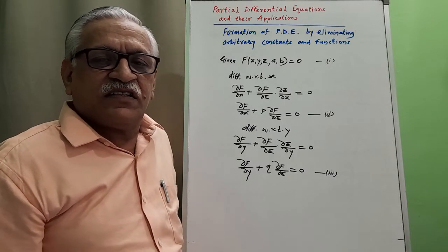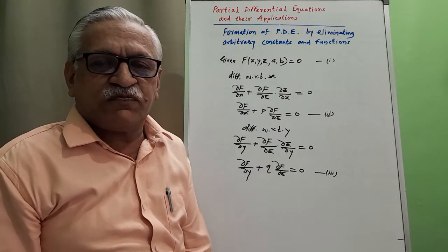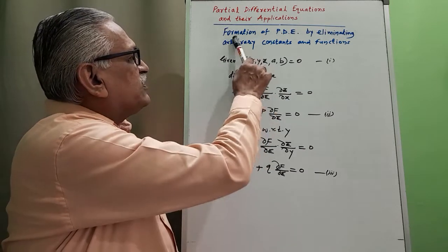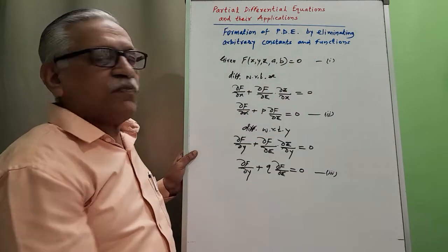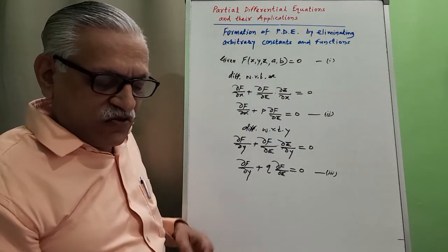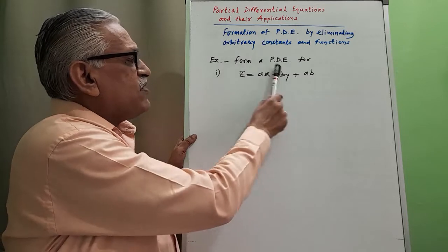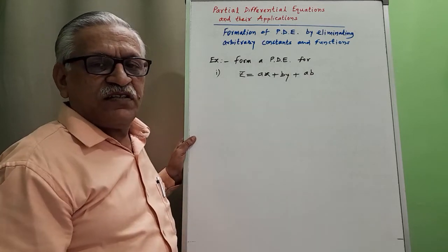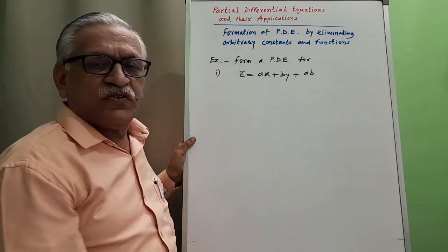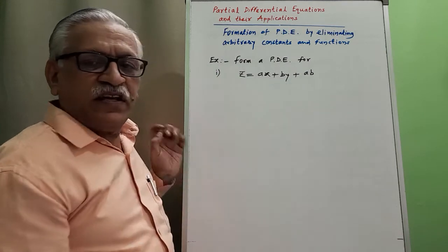Then let us try to solve some simple examples. In this first part, I will discuss three simple examples on formation of partial differential equation by eliminating arbitrary constants. The question is: form a partial differential equation for z equals ax plus by plus ab.